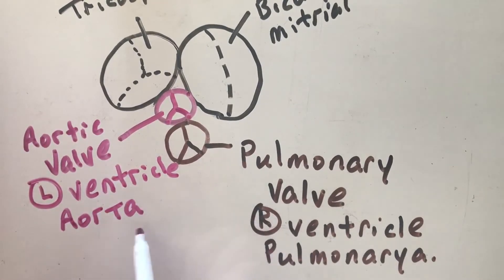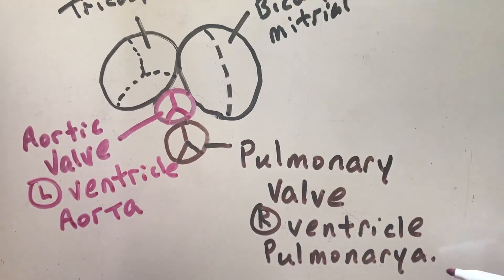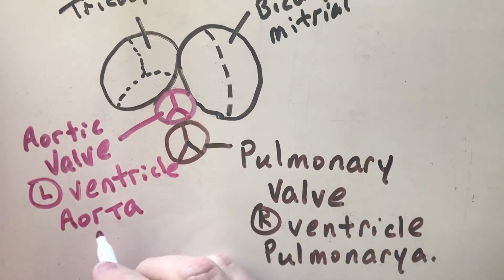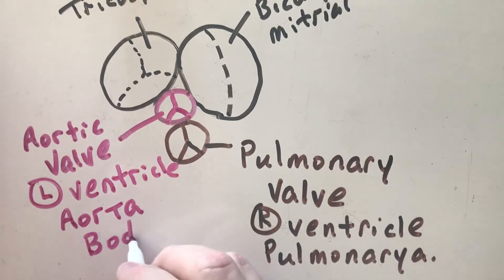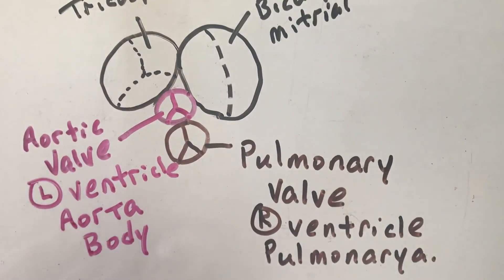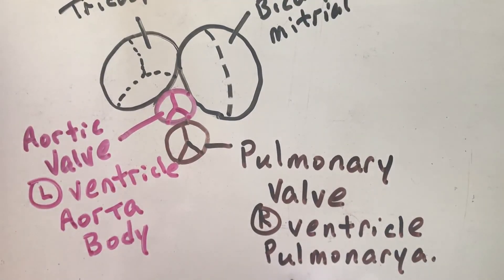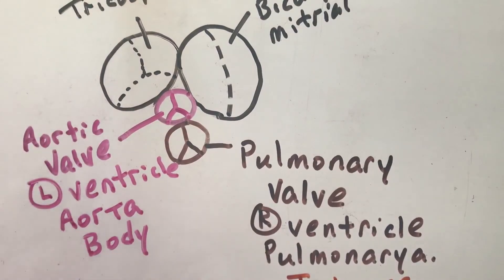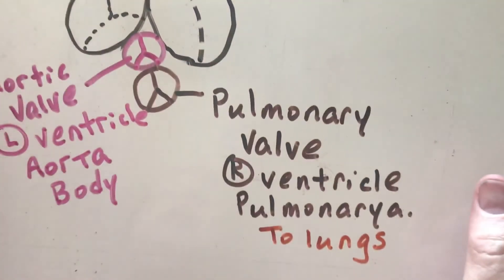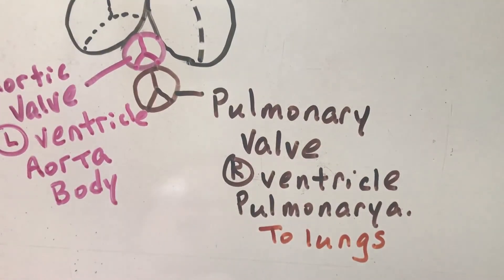Remember, the aorta brings blood out to the body, and the pulmonary artery brings blood to the lungs. I'm going to finish this in part two, where we'll talk about the pulmonary artery and the pulmonary vein.